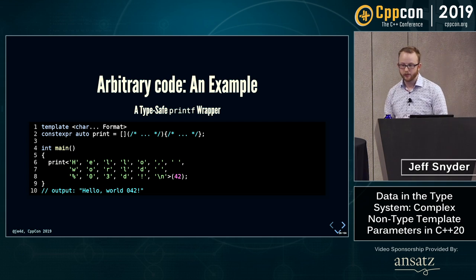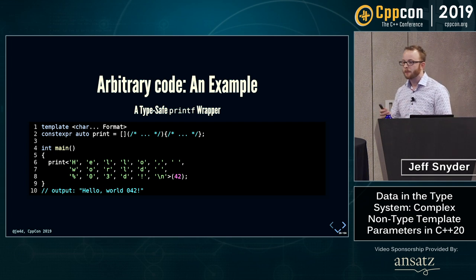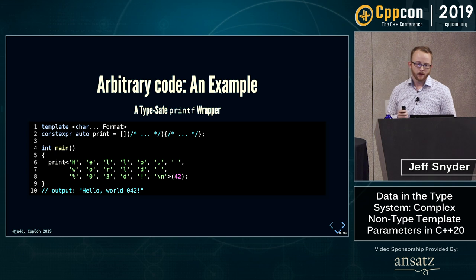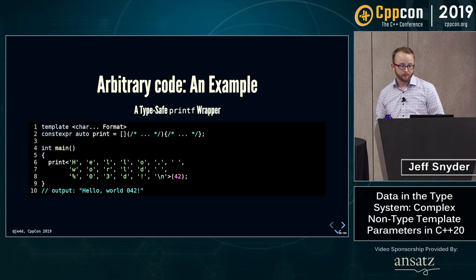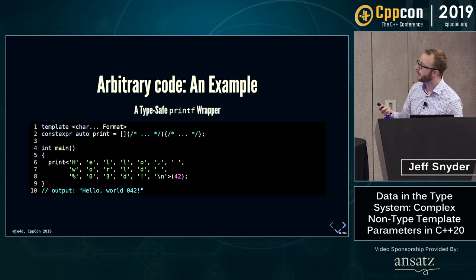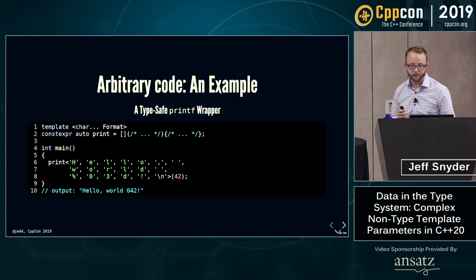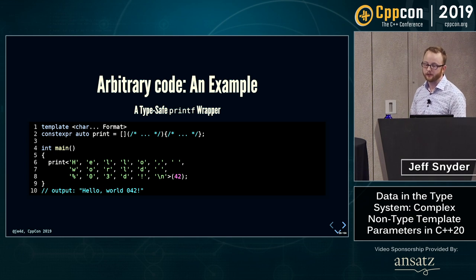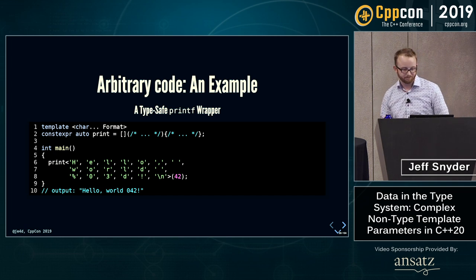Let's look at a deeper example — a typesafe printf wrapper. The idea is to template a print function on a format string like "hello world %03d". Print will then be a lambda whose parameters depend on the content of this string. With "%03d", the parameters are going to be just one int, because D maps to int. This isn't going to be feature-complete; there are a lot of things about printf I'm not going to implement due to time and slide space.